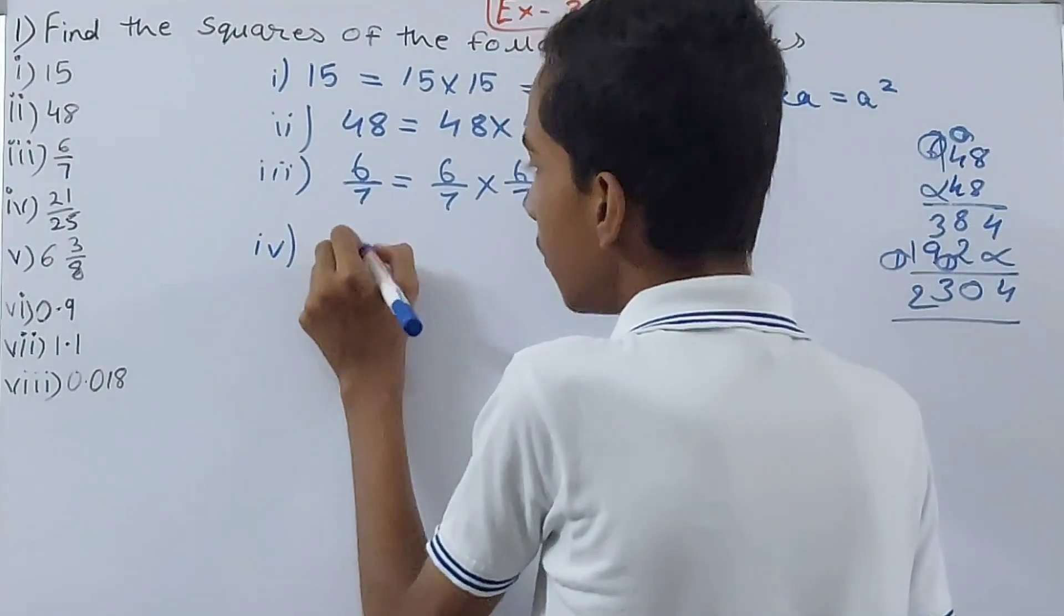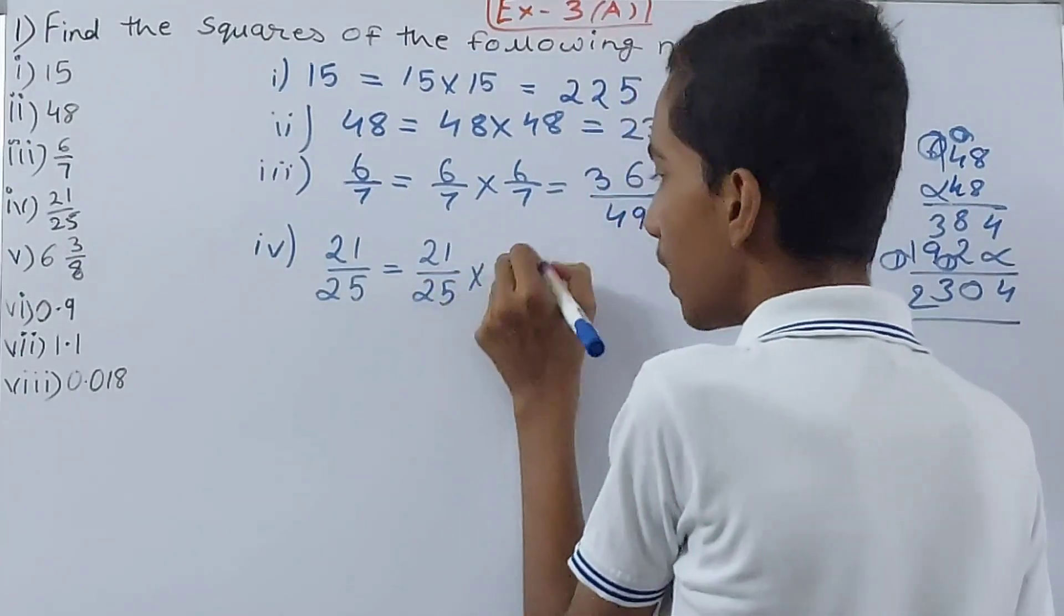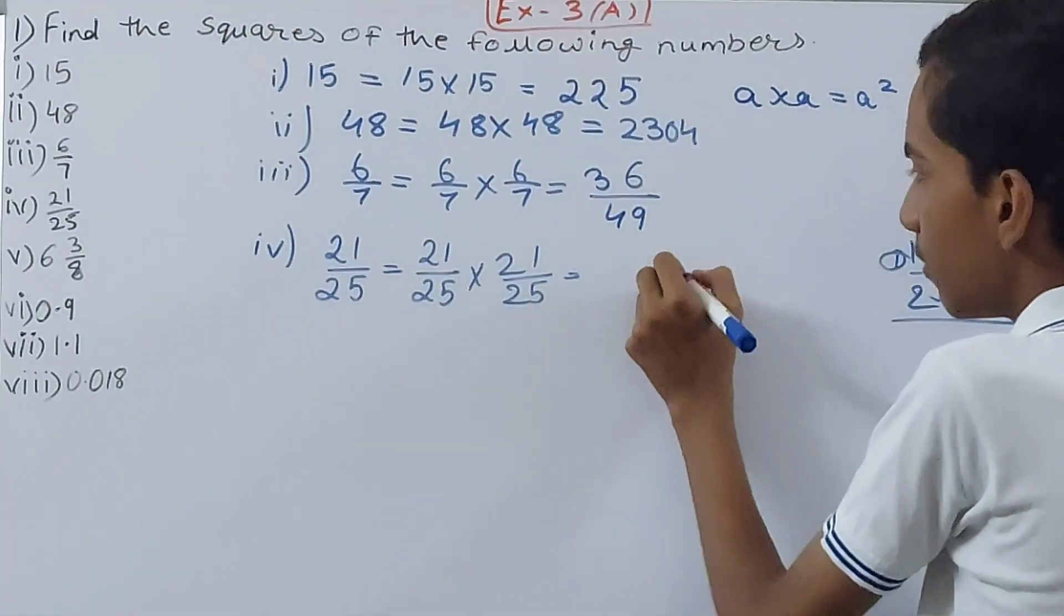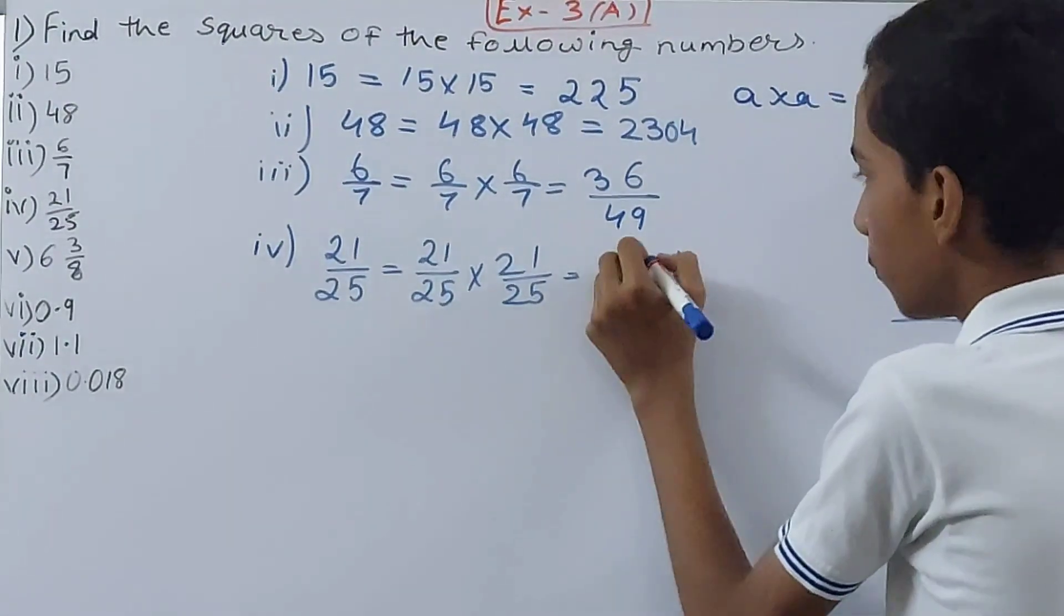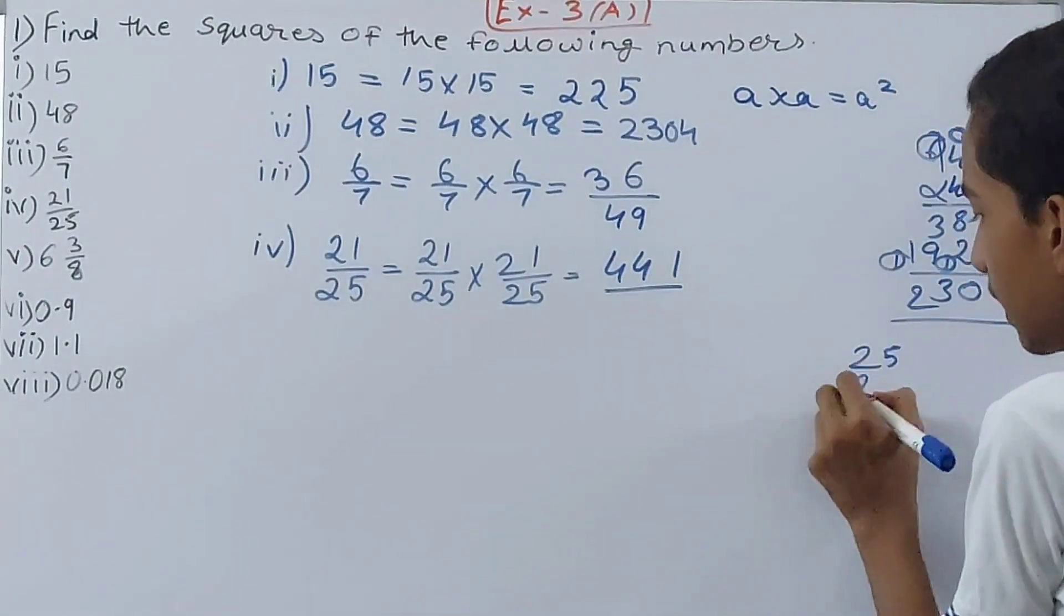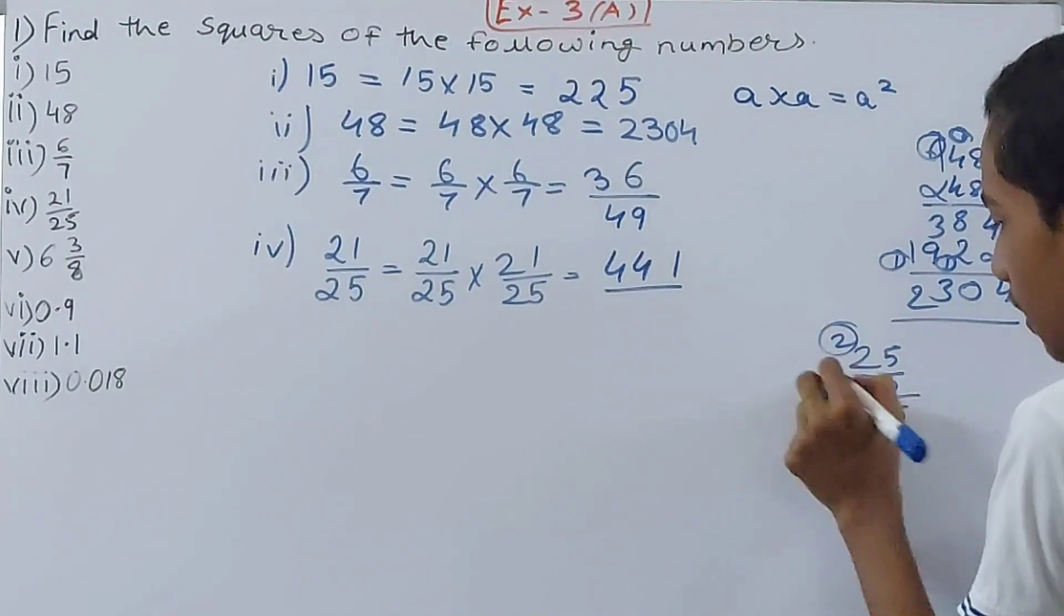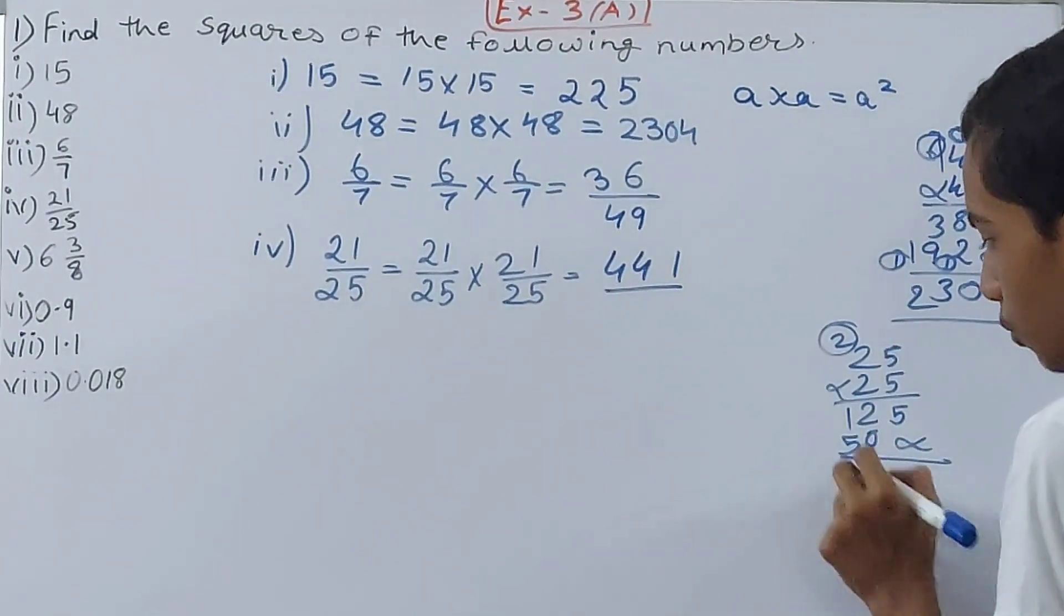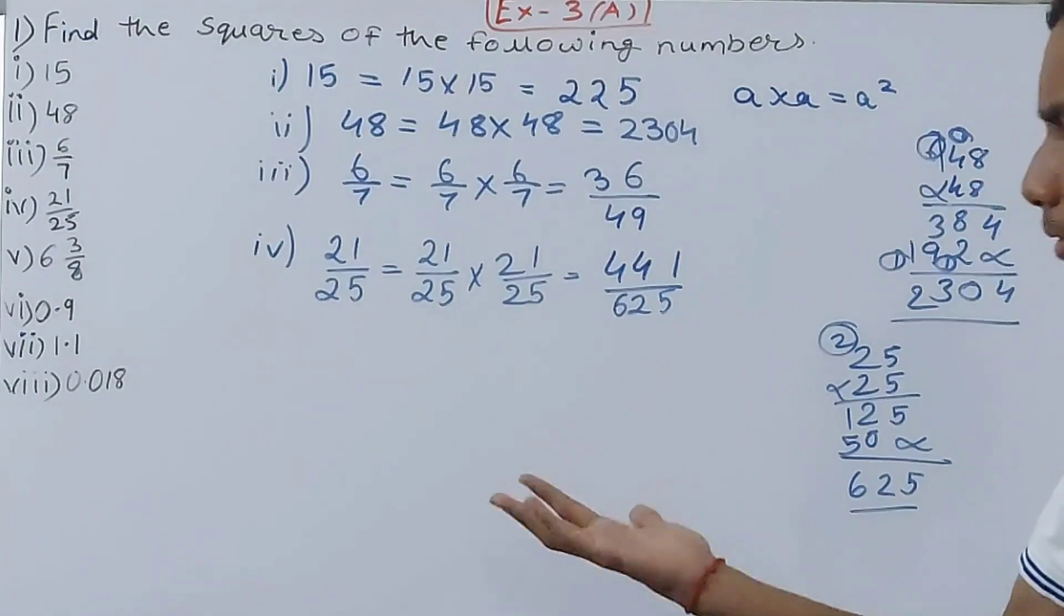Fourth one: 21 upon 25. That will be 21 upon 25 into 21 upon 25. 21 into 1 becomes 21, so 1 and 2 carried over. 21 into 2 is 42 plus 2 becomes 44, so 441. Now 25 into 25 - square root of 25 is 625, but I'll just do it for you guys. 5 times 5 is 25, 2 times 5 is 10 plus 2 is 12, so 625.